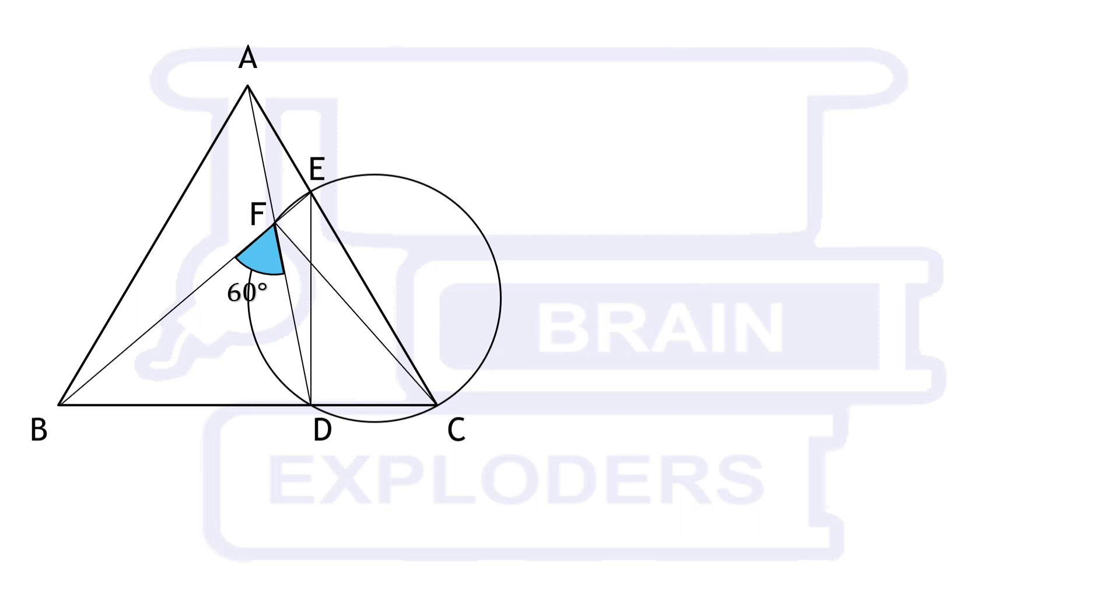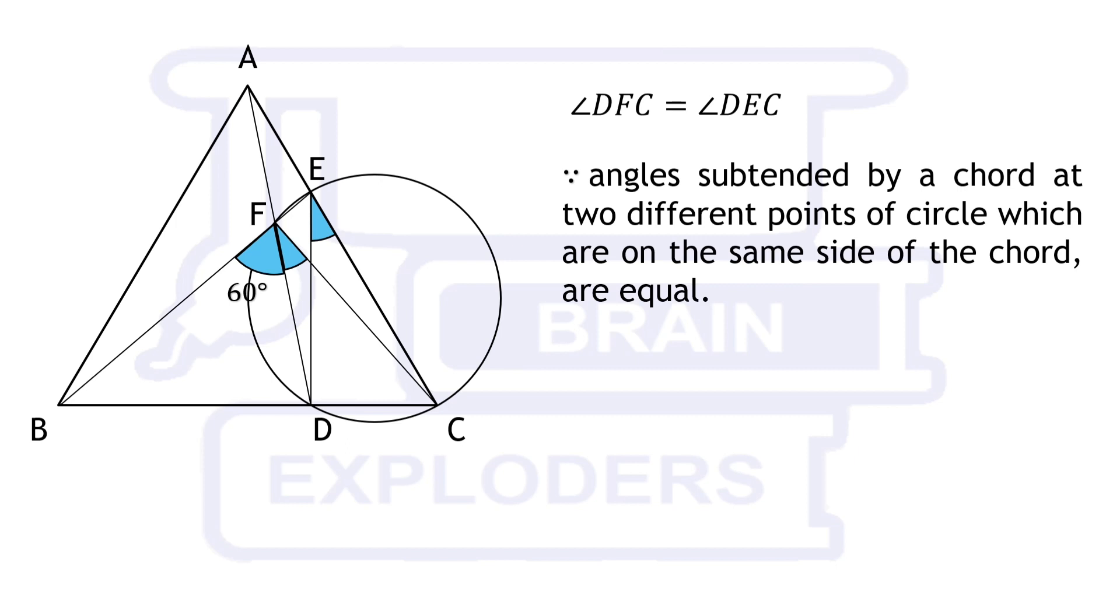Now here we will find that angle DFC is equal to angle DEC. It is because angles subtended by a chord at two different points of circle which are on the same side of the chord are equal.